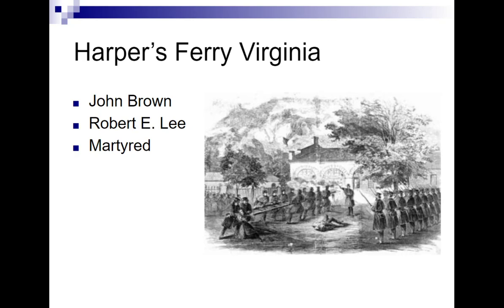Around the same time, another event happens. If you remember the name of John Brown — Reverend John Brown — he was the man who led his followers to murder people in Kansas and believed that God wanted him to free the slaves through any means necessary. Well, John Brown is having visions again, and they tell him he needs to get weapons so that he can lead an army of Black people to end all slavery. So he and his followers, which includes his family — his wife, his kids — are going to go to Harper's Ferry, Virginia.